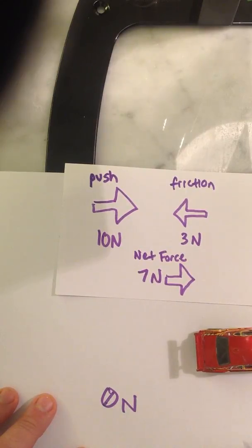When it becomes 0 newtons, suddenly the friction becomes the stronger force, and that 3 newtons works against the car until it finally brings it to a stop, and the forces become balanced again.